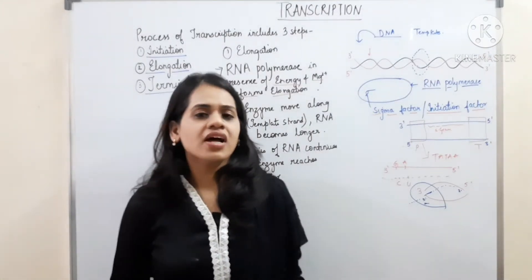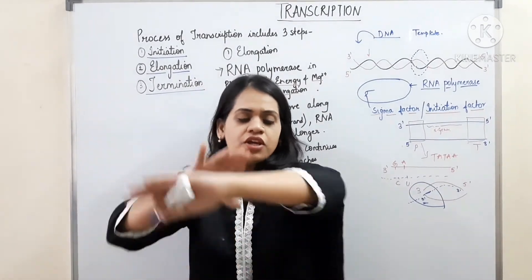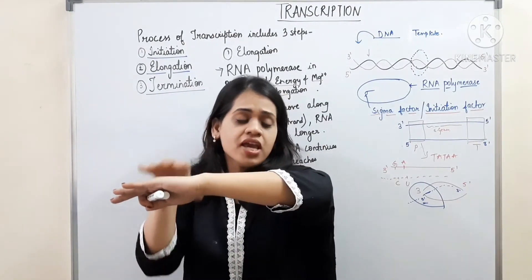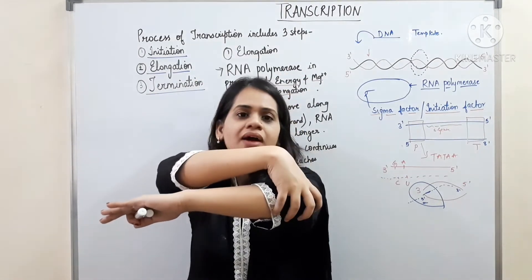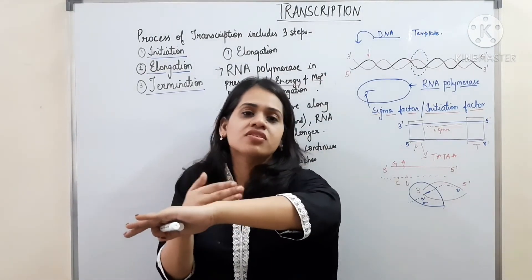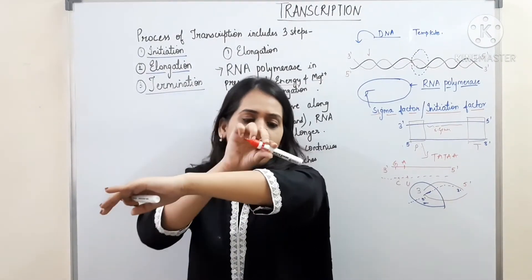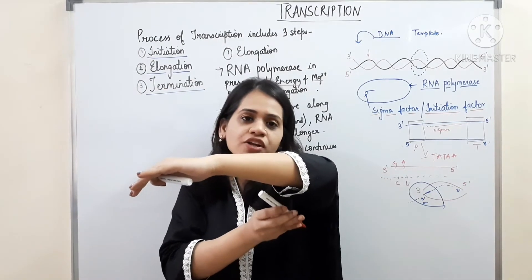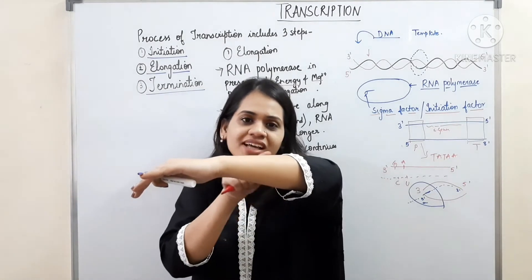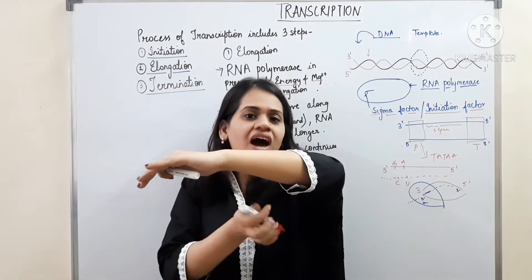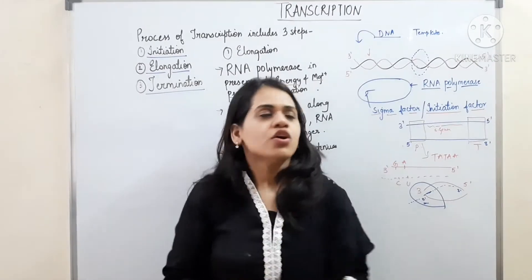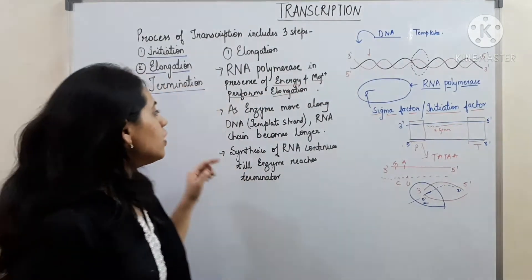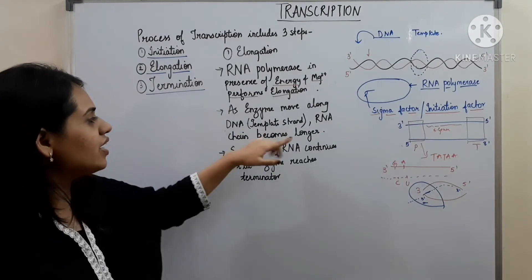The next step in transcription is elongation. In the previous step, RNA polymerase bound the promoter region. You can imagine the template strand running along, with RNA polymerase binding at the promoter and starting transcription. Slowly, as the RNA polymerase moves forward along the template, the nitrogenous bases attach to the RNA one by one and the length of the RNA is increasing. RNA polymerase in the presence of energy performs elongation, and as the enzyme moves along the template strand, the RNA chain becomes longer.